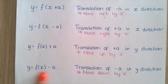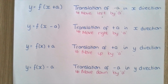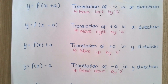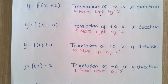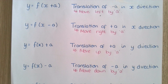Similarly, y equals f of x minus a — this is a translation of minus a in the y direction, which means your graph will end up moving down by the value of whatever a is. All you need to do is subtract the value of a from your y coordinates that were given to you originally in your graph y equals f of x.